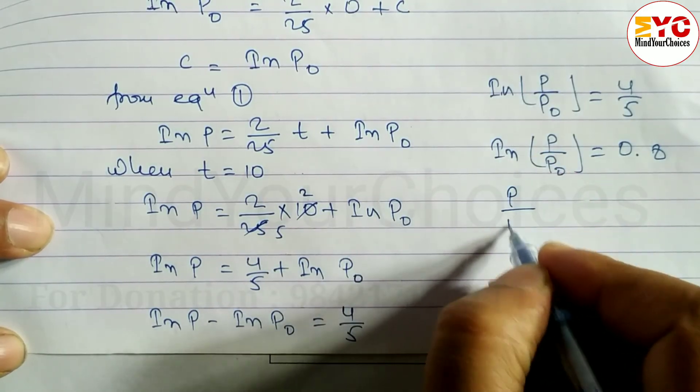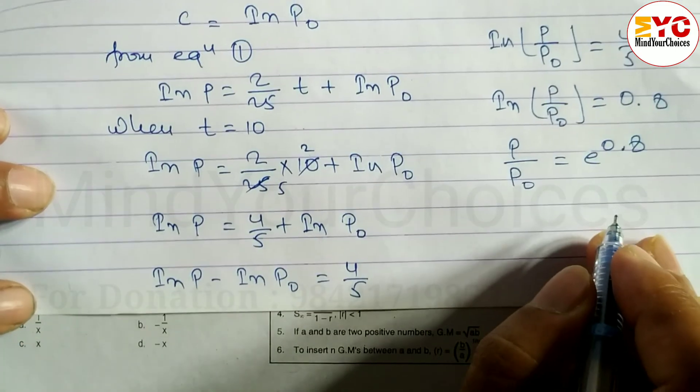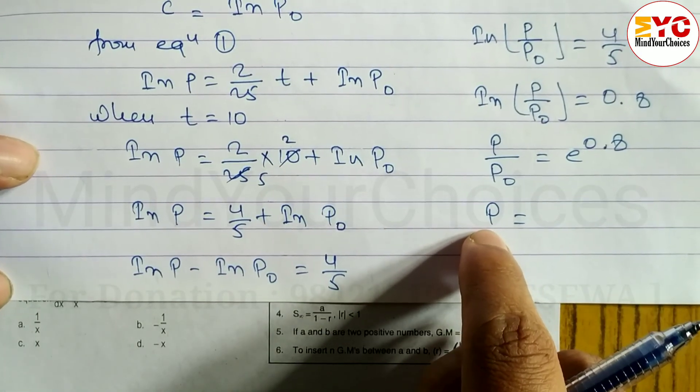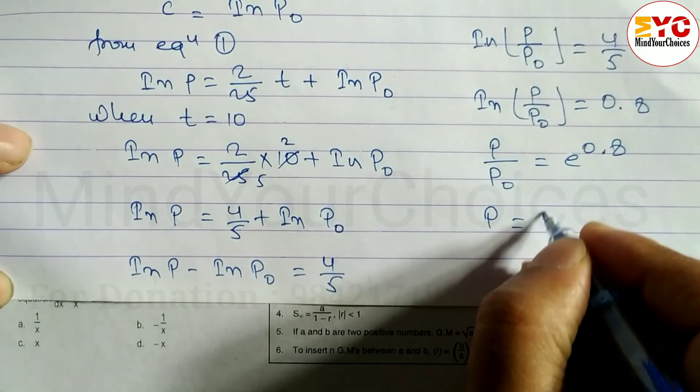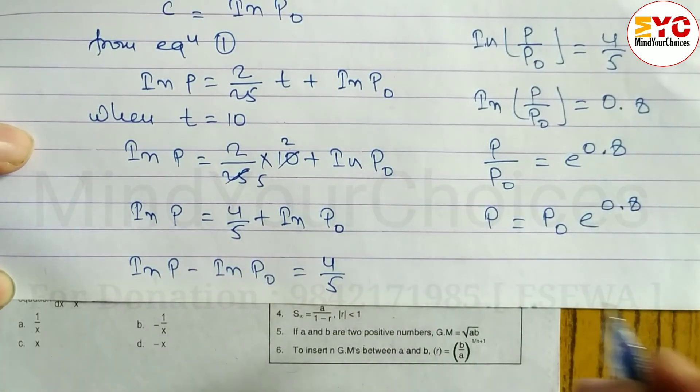Now taking exponential both sides, exponential and log cancel. So P by P0 is equal to e power 0.8. Cross multiply: population after 10 years P is equal to P naught e power 0.8.